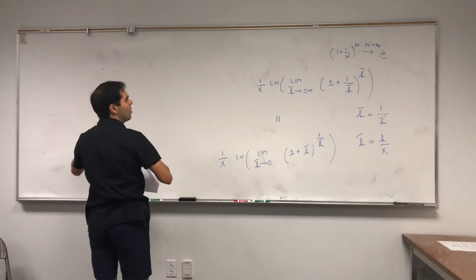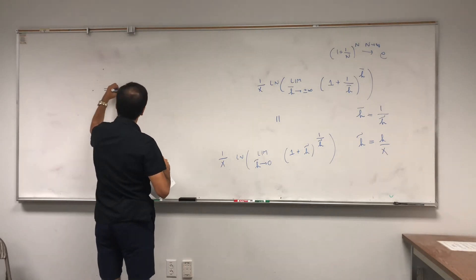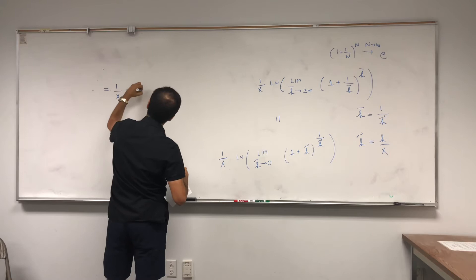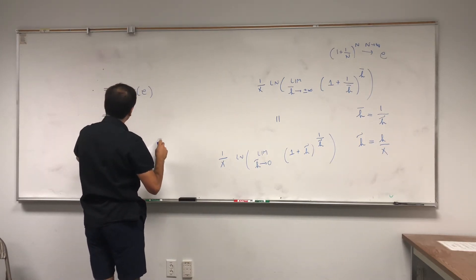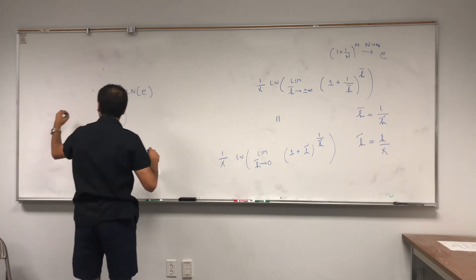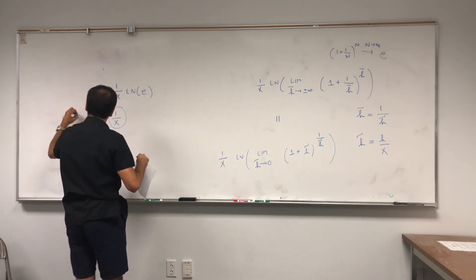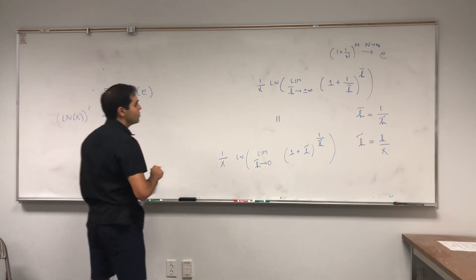So we get 1 over x ln of e, but ln of e by definition that's 1. So in the end we get that the derivative of ln is 1 over x.